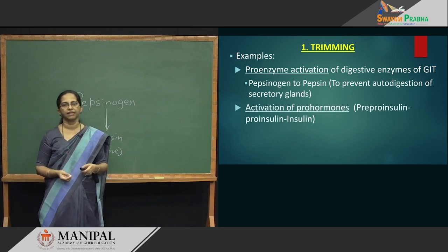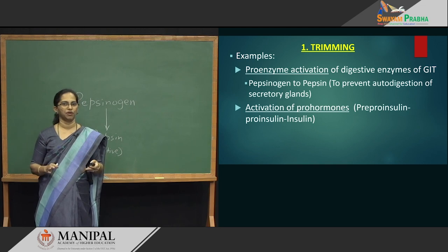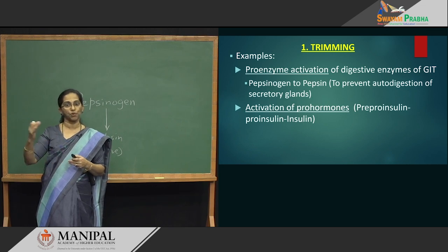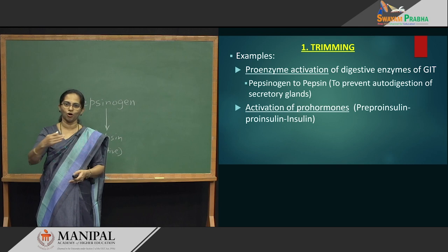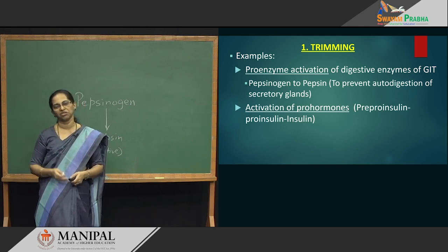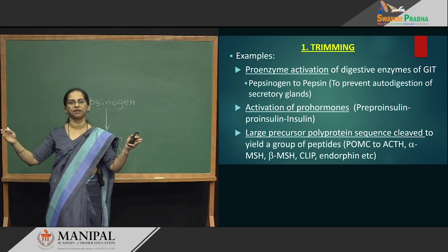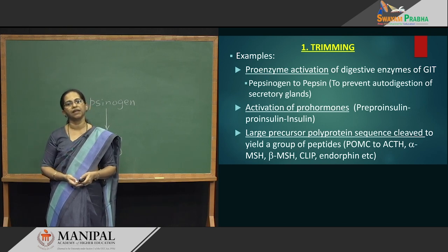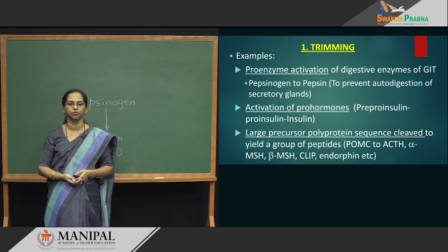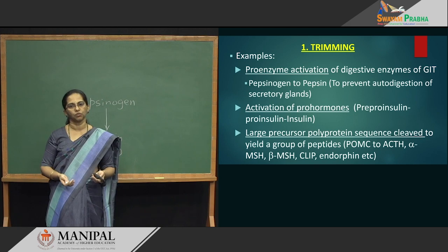Let us go on to the second example — activation of pro-hormones. For example, all of us know about insulin. Do you think we produce insulin directly? No. We first produce pre-pro-insulin, trim it to make pro-insulin, trim it again and then make insulin. It is not directly released as an active hormone — we make it as the pre-forms, trim, trim, trim and then make it the active hormone. Second example for trimming is the activation of hormones. There is also a big precursor peptide in the brain — the POMC peptide — from which by trimming you make about four or five active peptides like melanocyte stimulating hormone or ACTH. From one peptide by trimming, you make many peptides. That is about trimming.